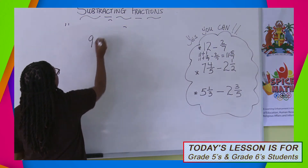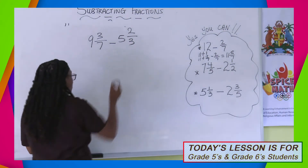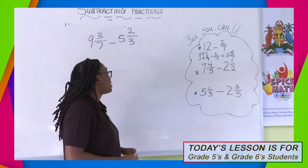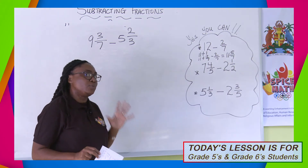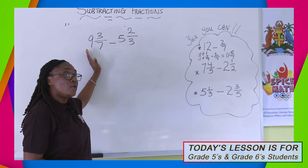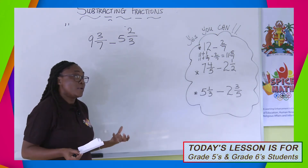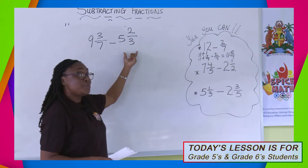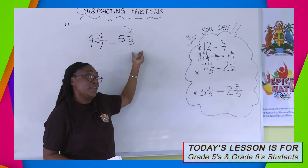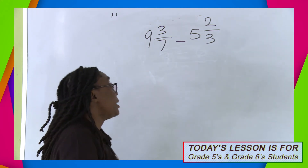We're going to do 9 and 3 over 7, and take away 5 and 2 over 3. It's always important to look at your question and visualize the answer range. I'm taking 5 from 9 to get 4, so my answer has to be somewhere around 4. Now, 3 sevenths is less than half, and 2 thirds is more than half. Right there you should know you'll have a problem, because the subtrahend fraction is bigger than the minuend fraction.